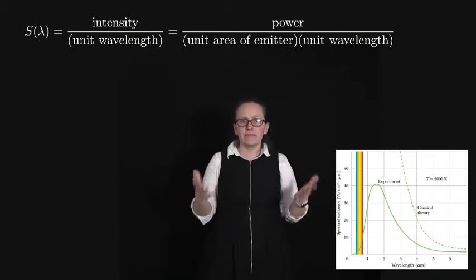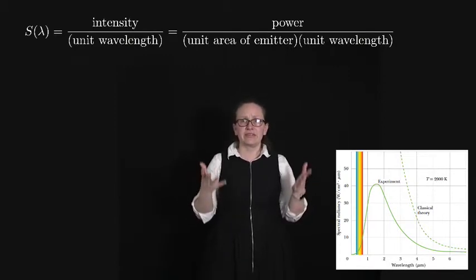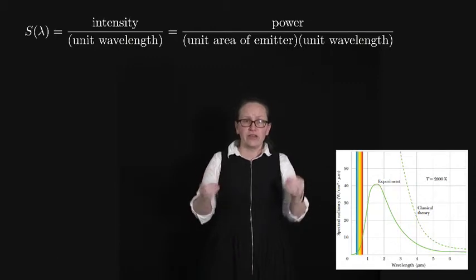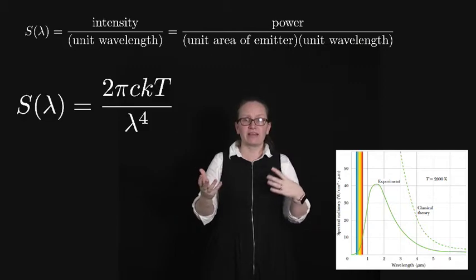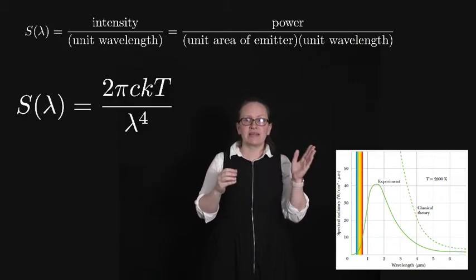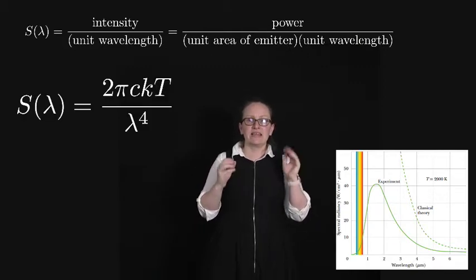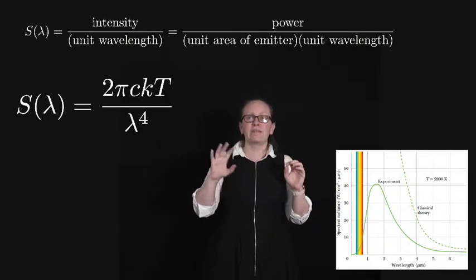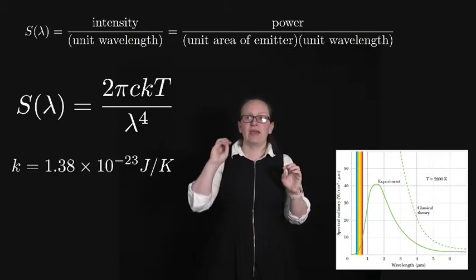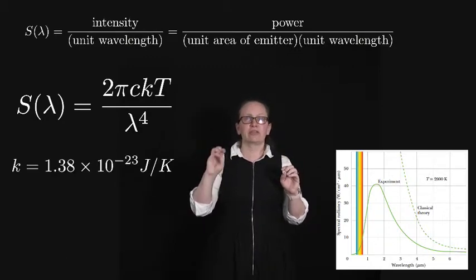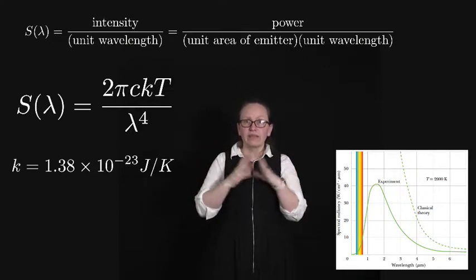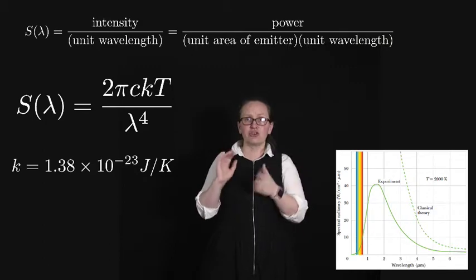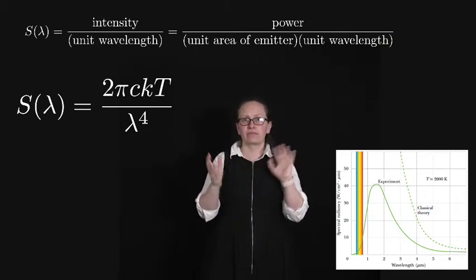The problem was that classically we couldn't describe the shape of this curve. Classically the spectral radiance curve should have been given by the function S(λ) = 2πCKT/λ⁴ where K is Boltzmann's constant which is 1.38 joules per Kelvin.